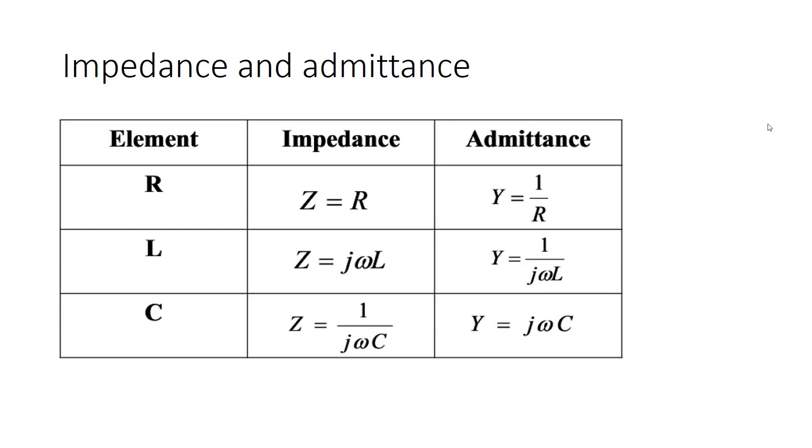So let's see some examples about impedance. The R is resistance. And the impedance is equal to R. And we can show it 1 over R. What about the inductance? What is the impedance of inductance? As you see, it's equal to jωL.